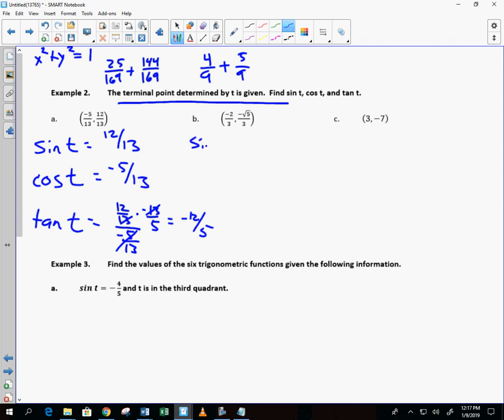So, I can do sine of T is equal to negative root of 5 over 3. I can say cosine of T is equal to negative 2 over 3. And I can say that the tangent of T is equal to, well, I divide those two, won't I? I'll take negative root of 5 over 3, and I'll divide it by negative 2 thirds, or multiply it by negative 3 halves. Negatives cancel, so do the 3s. I get root of 5 over 2.